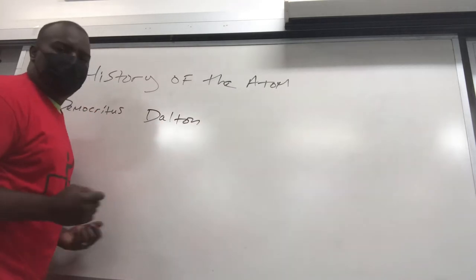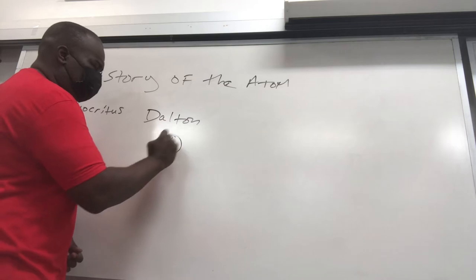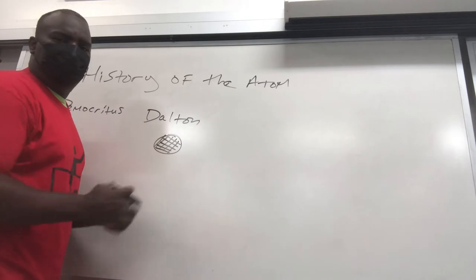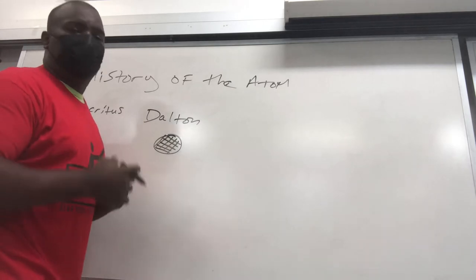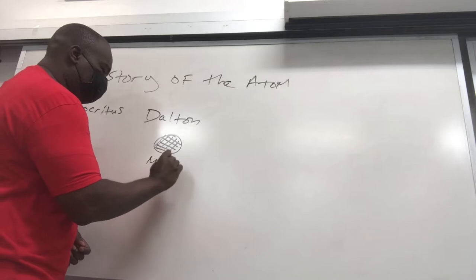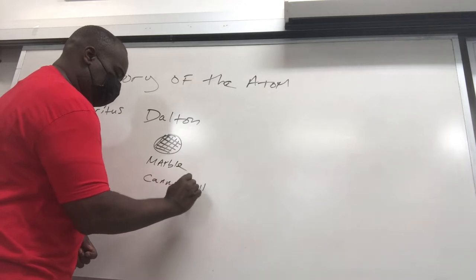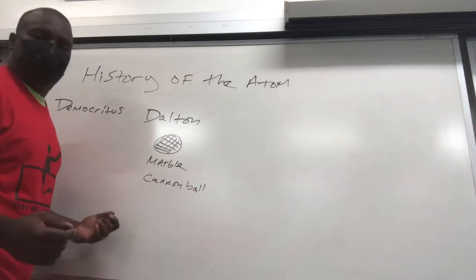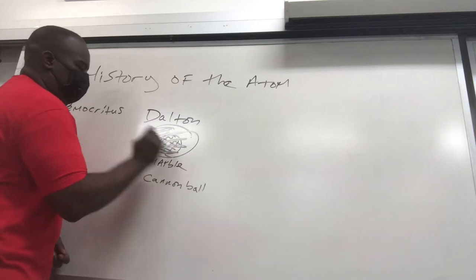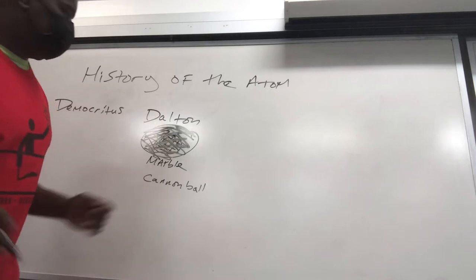Now Dalton's model of the atom is a solid, indivisible, homogeneous sphere. No parts to it — just a solid ball. So think of a marble, think of a cannonball. Sometimes this model is called a marble model or a cannonball model. There are absolutely no parts to it. Think of a sphere and you just color it in.